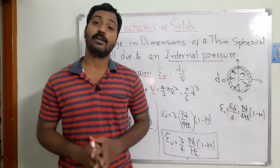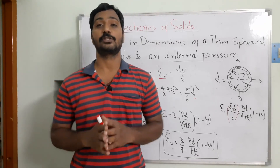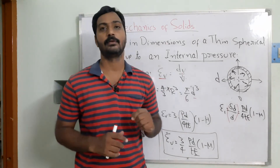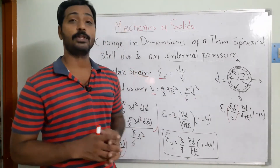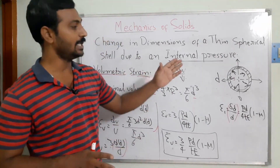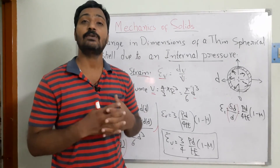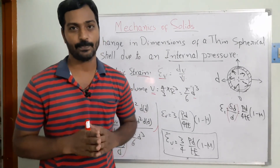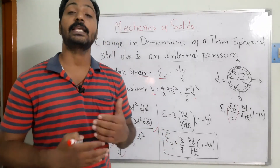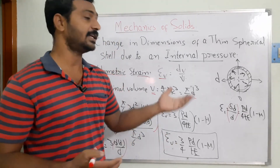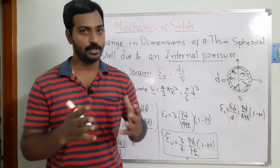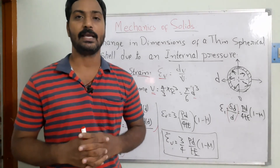In spherical vessels there are no shear forces — only Sigma 1 and Sigma 2, which are equal and like forces. I hope you are able to understand the mathematical model for analyzing the strain inside the material. If you feel any confusion or difficulty, please put it in the comment section and I will reach out to you. Thank you.